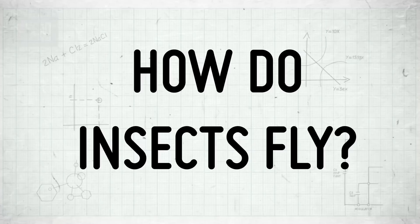If a plane were the size of a bee, it would never be able to fly. So how is it then that insects fly? To understand this, you have to look at the way that an insect moves its wings.